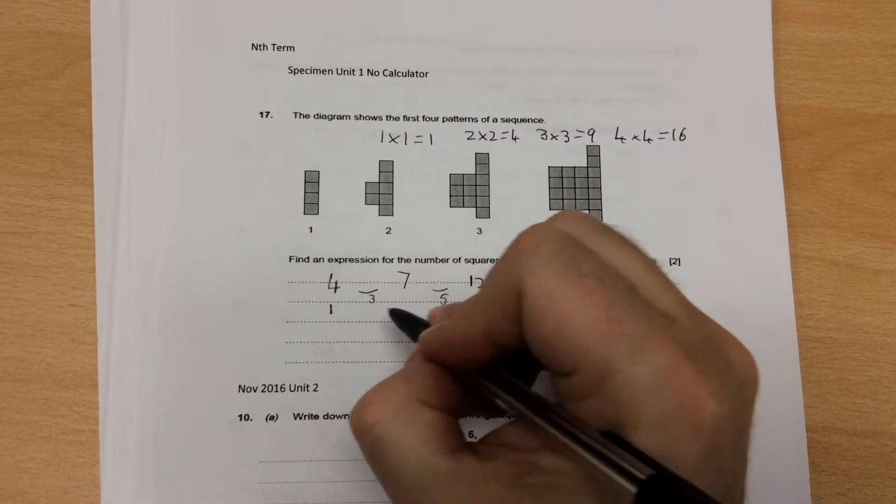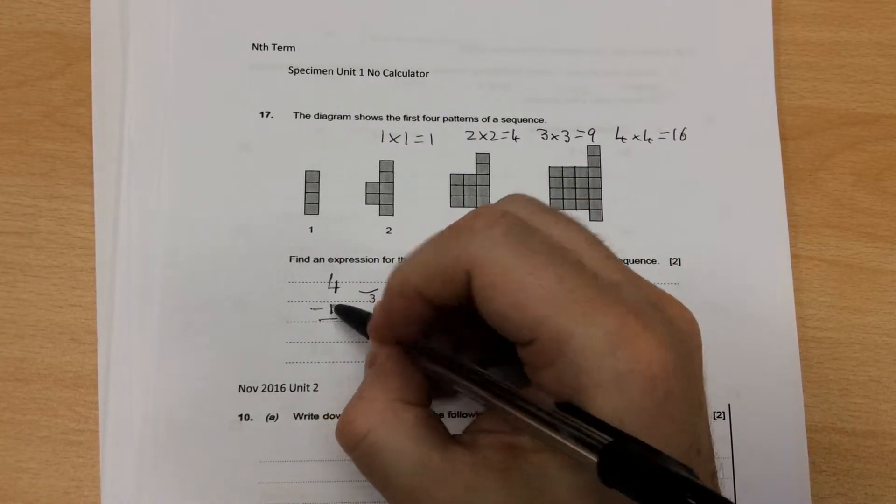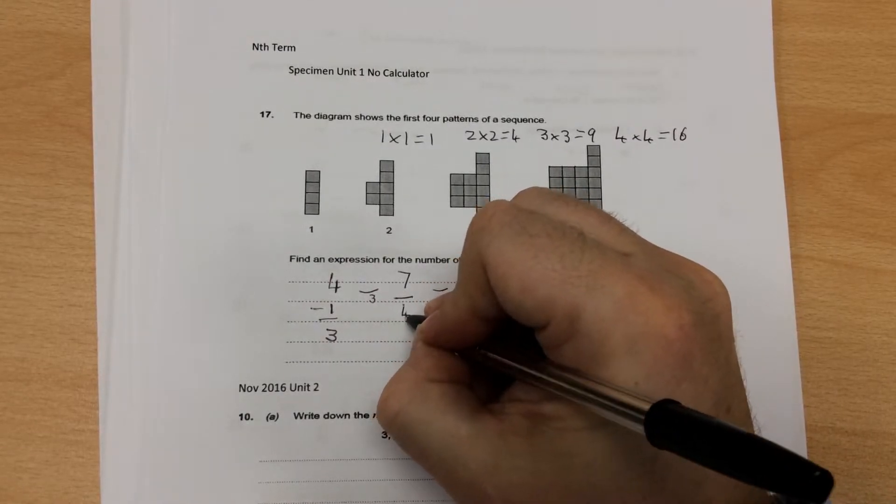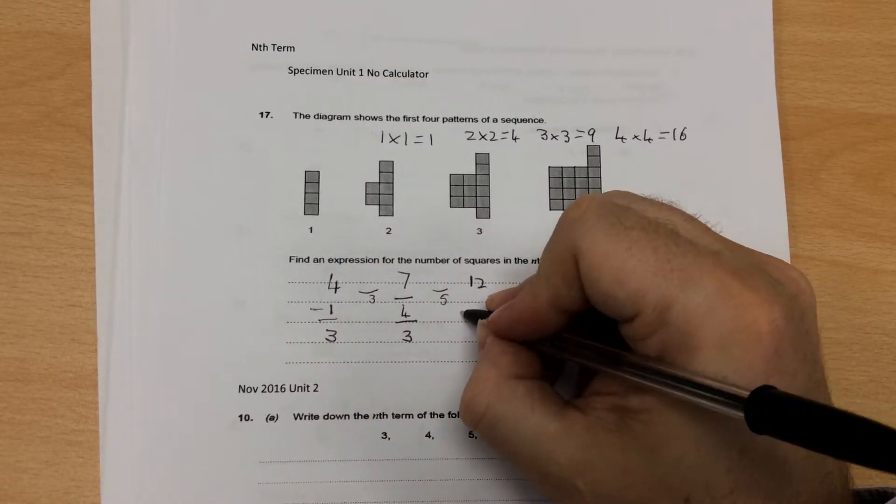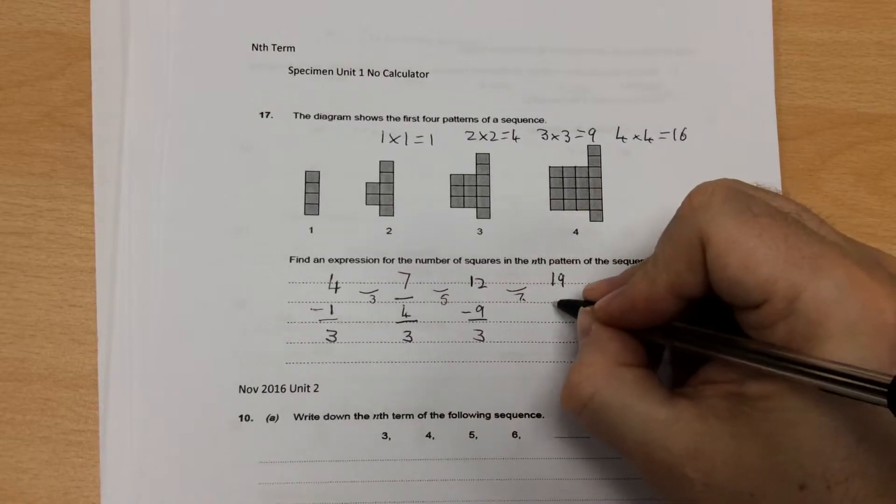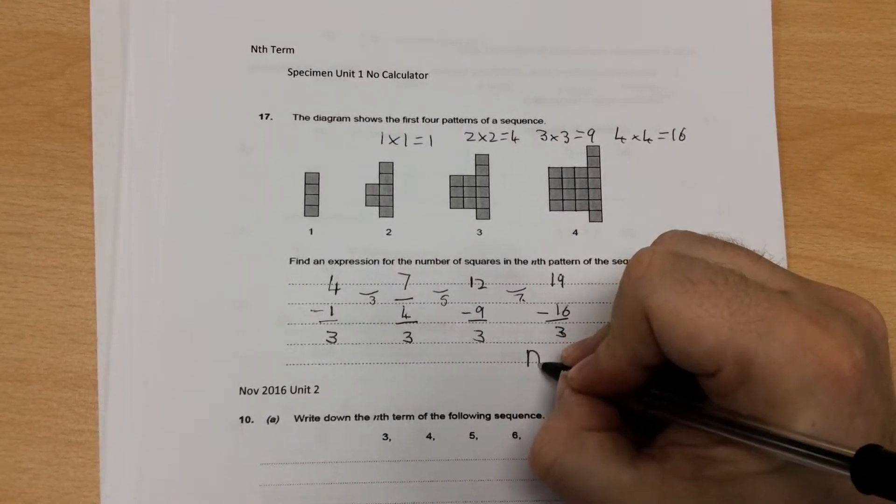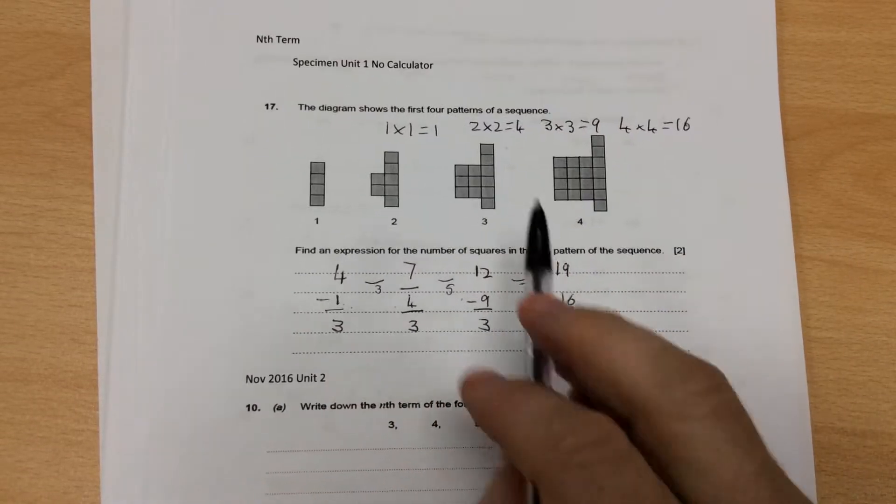With this one here, I'm going to take away the, with this quadratic, I'm going to take away the nth term. Four take away one is three. Seven take away four is three. Twelve take away nine is three. Nineteen take away sixteen is three.